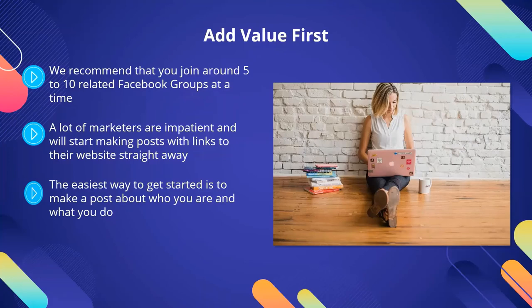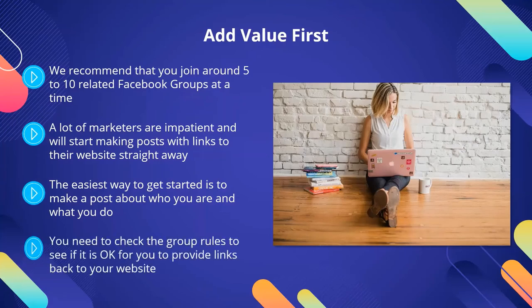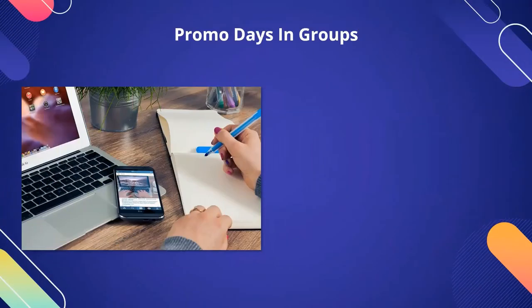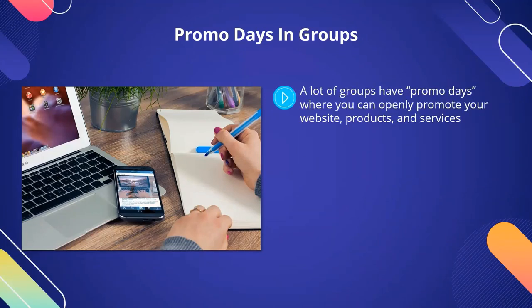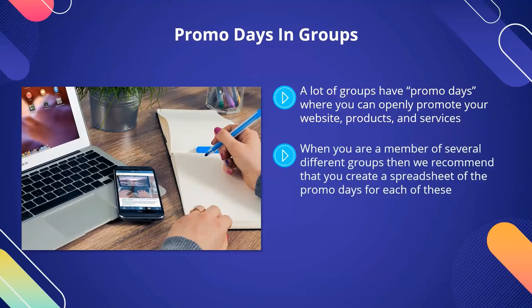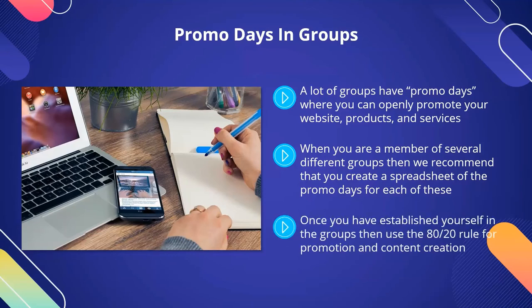The easiest way to get started is to make a post about who you are and what you do — a getting-to-know-you post, which is perfectly acceptable. A number of group members will respond to your post and welcome you to the group. You need to check the group rules to see if it is okay for you to provide links back to your website. Most groups will allow this, but a small number may not. Promo Days in Groups. A lot of groups have promo days where you can openly promote your website, products, and services. The owner will have a list of which days promotions are allowed, so you need to find this. When you are a member of several different groups, create a spreadsheet of the promo days for each. Once you have established yourself in the groups, use the 80-20 rule: spend 80% of your time on promoting your content and 20% of your time on new content creation.